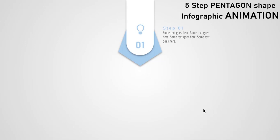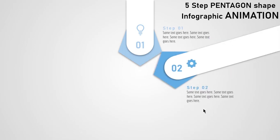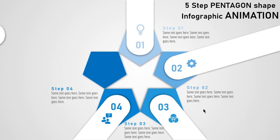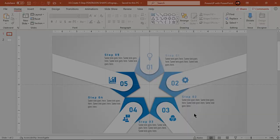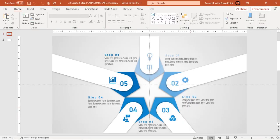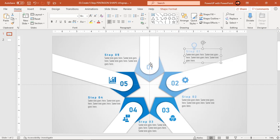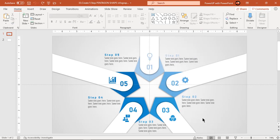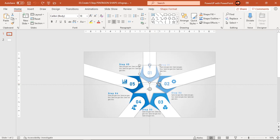Welcome back! Today we are going to create this amazing animation. As usual, let's first check how many elements need to be animated by dragging them apart. This will help us determine if any elements need to be grouped or ungrouped to make an effective animation. Now press Ctrl+Z to undo all changes. We need to do some changes before we start the animation.